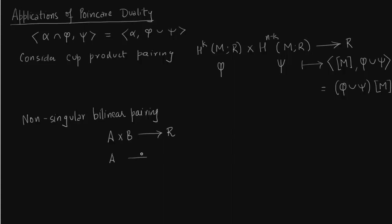What does this bilinear pairing mean? Map A to Hom_R(B,R), so this is to be related to the above map. Take A as H^K and B as H^(N-K) and write down this formula in terms of H^K and H^(N-K). So non-singular means that these two are ISO. So now let us do some application of non-singular.